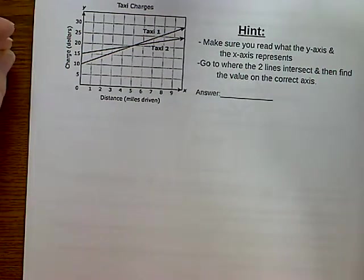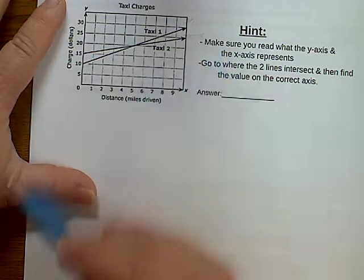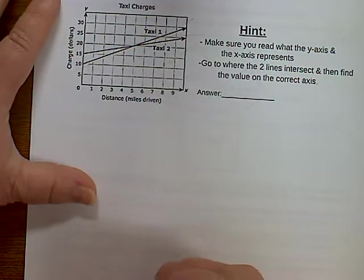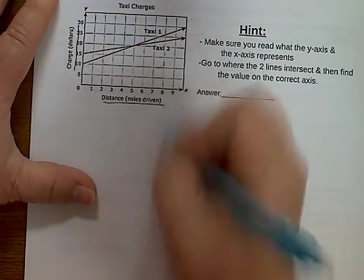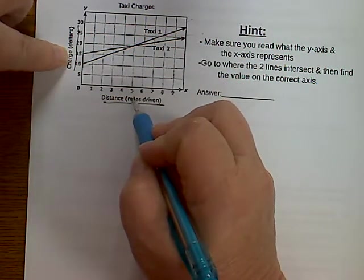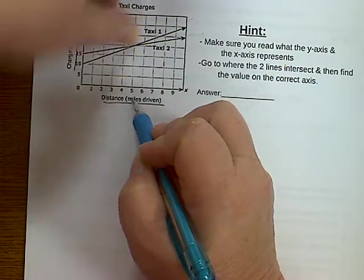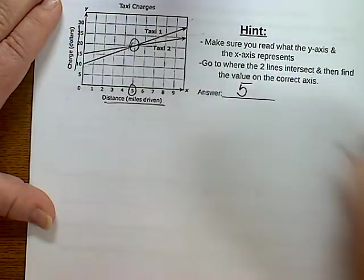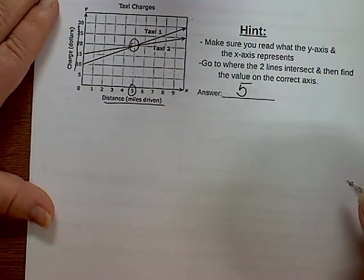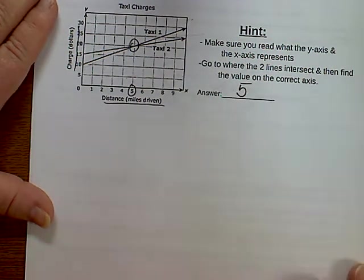Example number two. How many miles will the two taxi services cost the same amount? So there again, they're wanting to know when this taxi and this taxi, how many miles. So in this case, you need to be able to read the sides of your graph because they could have asked how much will it cost, which would be $20. But in this case, they want to know how many miles, which is five. So make sure you're looking at the correct axis for what you're having to answer.